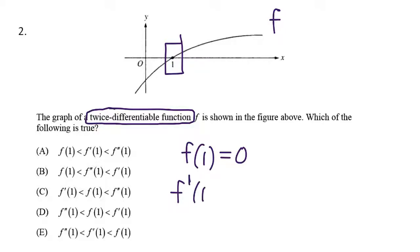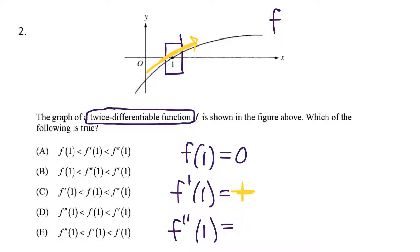For f prime at 1, I won't know a specific value, but I should be able to pick out a sign. Notice what my function is doing at the value of 1 — would it be increasing or decreasing? Well, this function is increasing, so if my function is increasing, I know my derivative is positive. I don't know a specific value for f prime of 1, but I do know the sign is going to be positive.